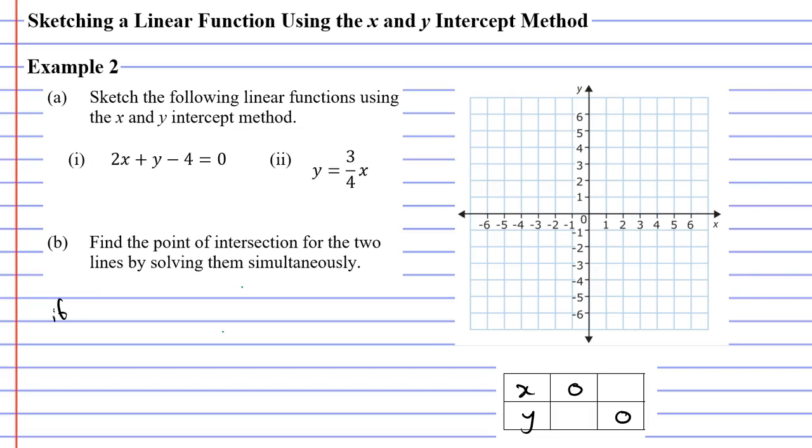So if x equals zero we get 2 times 0 plus y minus 4 equals 0. All we've done is taken this equation and substituted zero in place of x. Whenever you multiply something by zero it ends up cancelling out. So we're left with y minus 4 equals 0. We add 4 to both sides, giving us y equals 4.